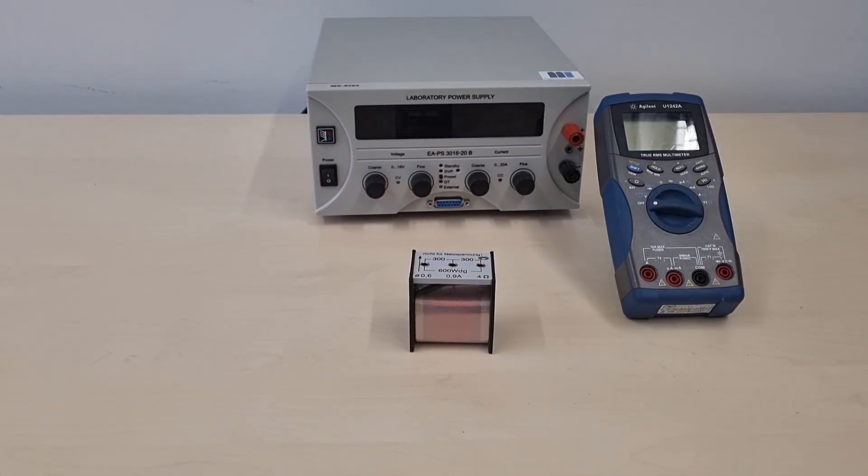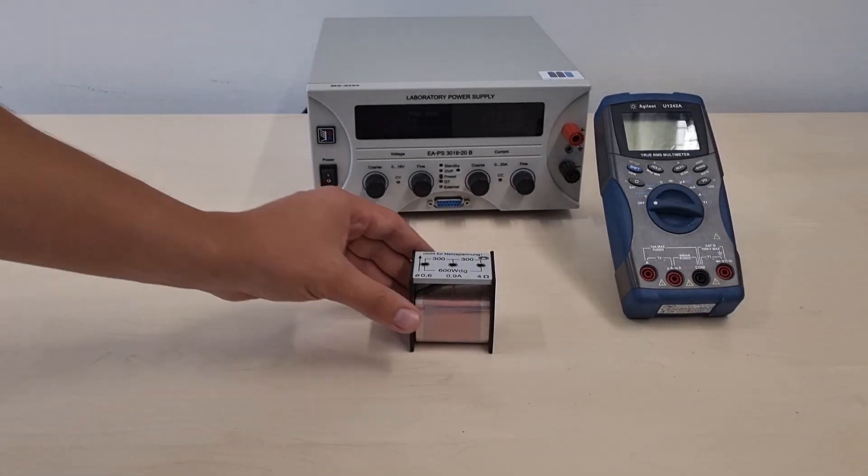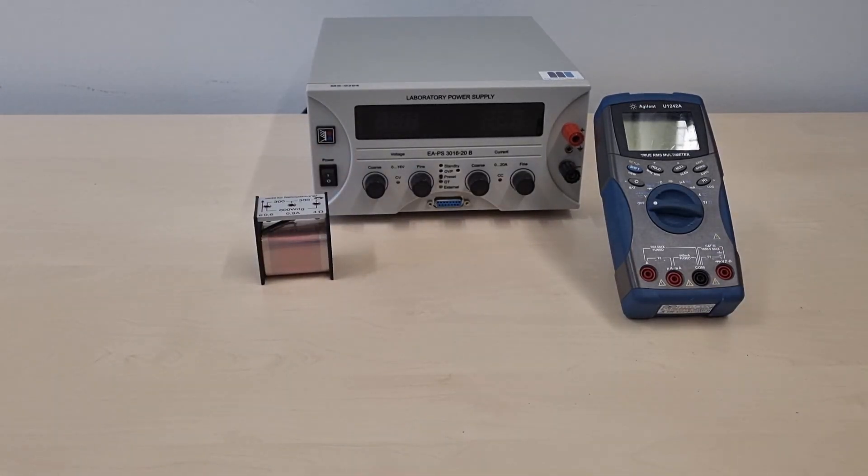Additionally we use a coil which will act as a solenoid. At the end we will see what happens if we add an iron core to the solenoid.